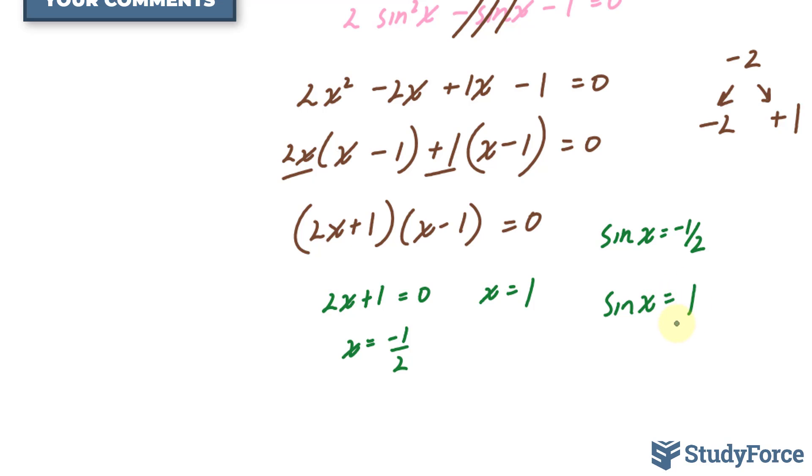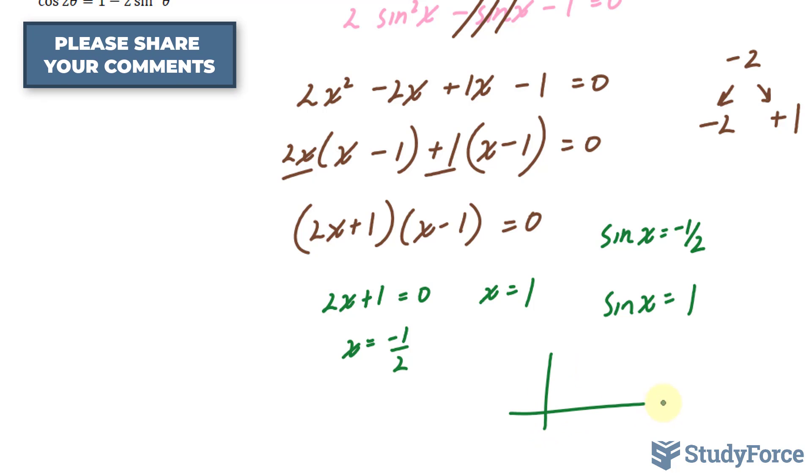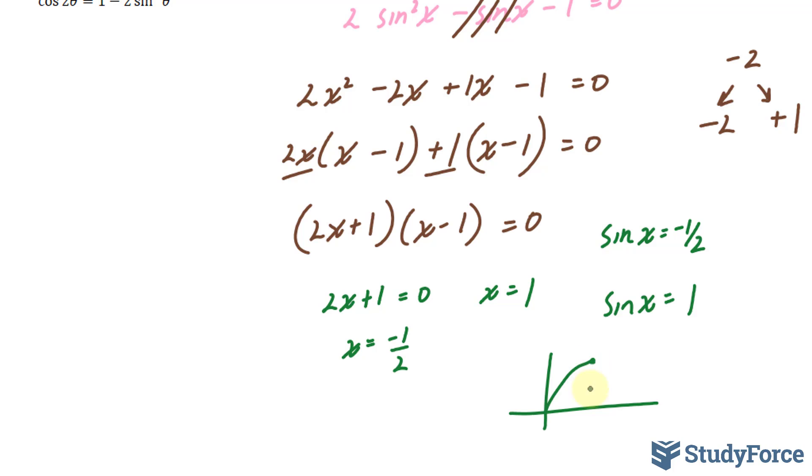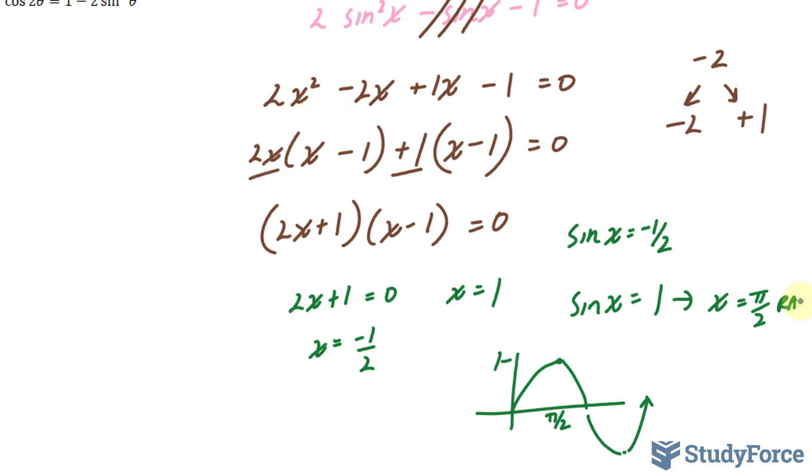Remember what a sine wave looks like. I'll draw it out for you. It starts off at zero and zero. It makes its way up to its maximum point, then back to zero, then to its minimum, and then the cycle ends. So it reaches one, let's call this one, between zero and pi, which is pi over two. So the answer here, one of our angles, is pi over two radians.